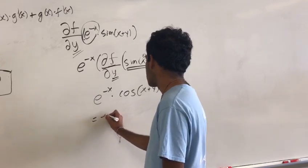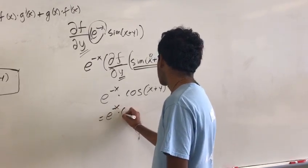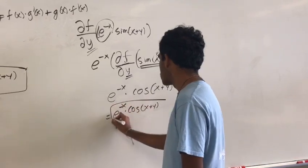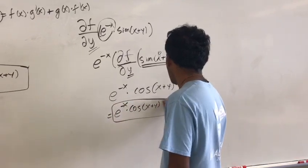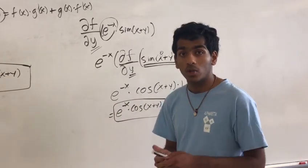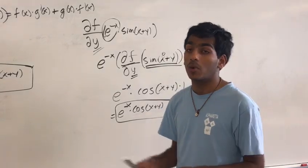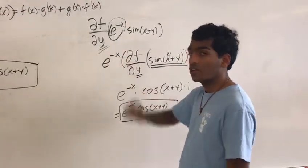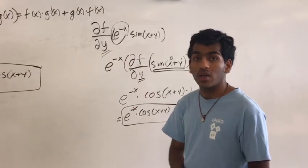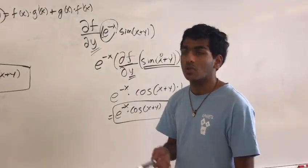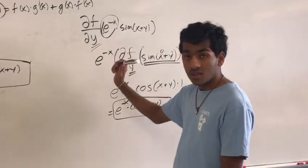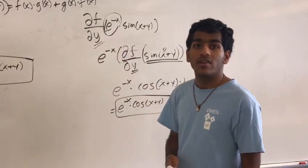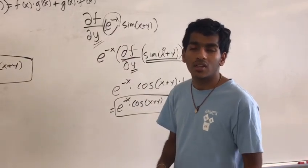And our final answer would be e raised to the negative x times the cosine of x plus y. Keep in mind with multivariate differentiation and partial derivatives in general — you just have to make sure you know the variable you're differentiating with respect to, because any term that does not have that variable is a constant, and you can just push it out of the derivative to make life easier.